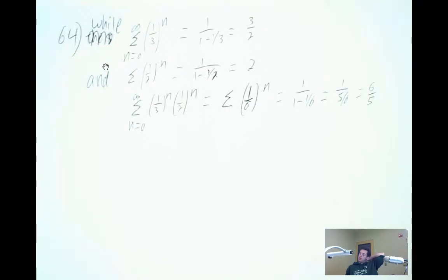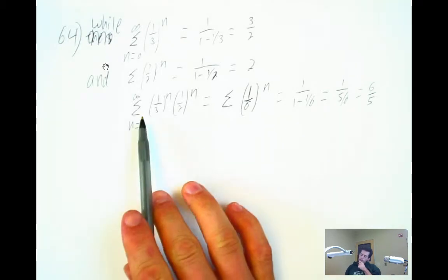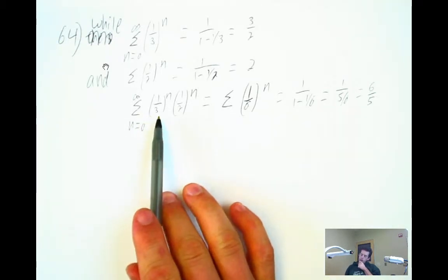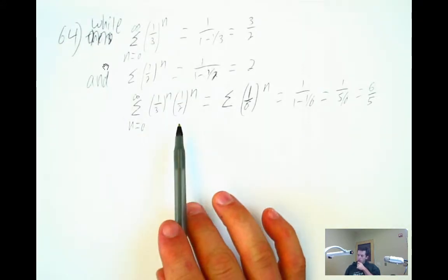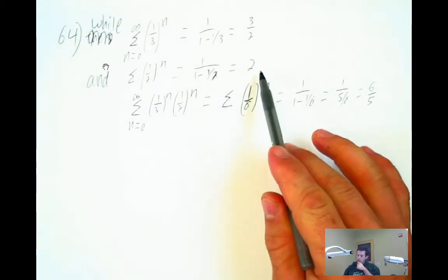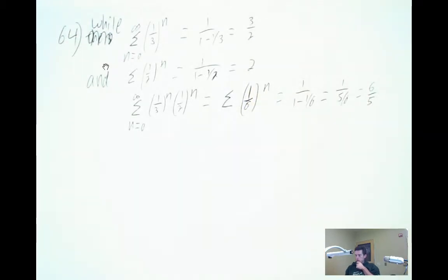The idea is to show that while this sum of the products of the elements of the sequence does converge, it does not converge to the product of the sums of the series.